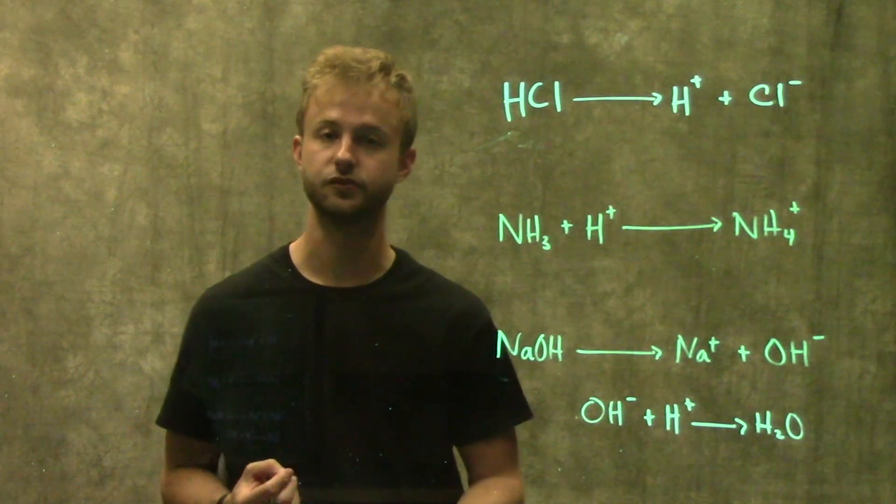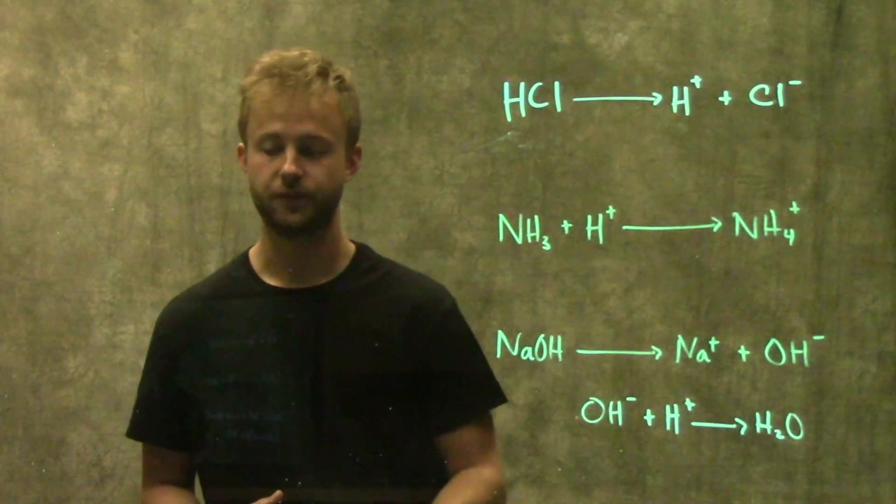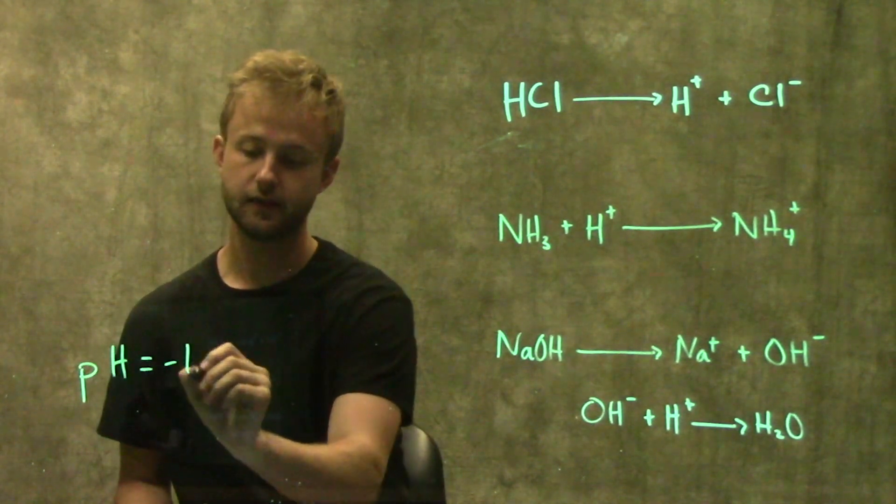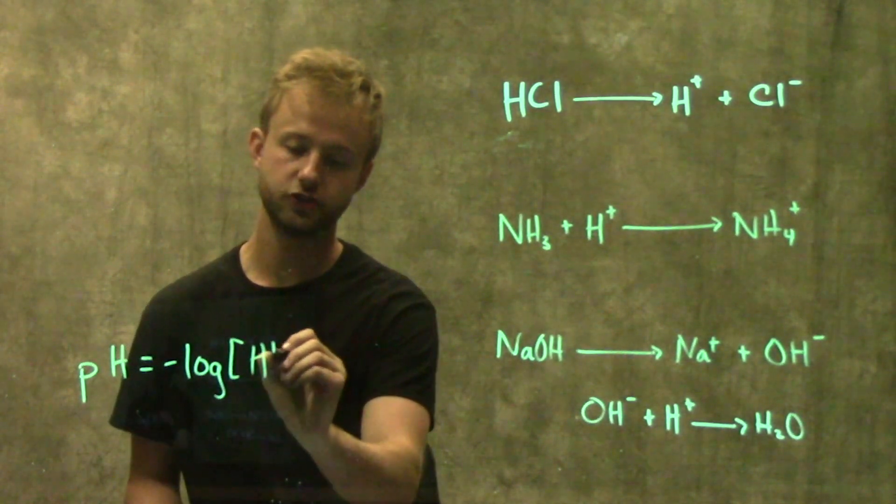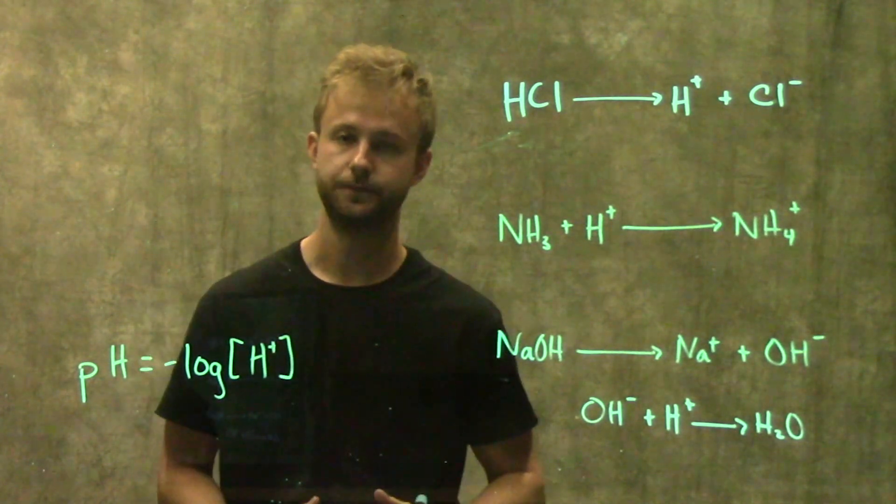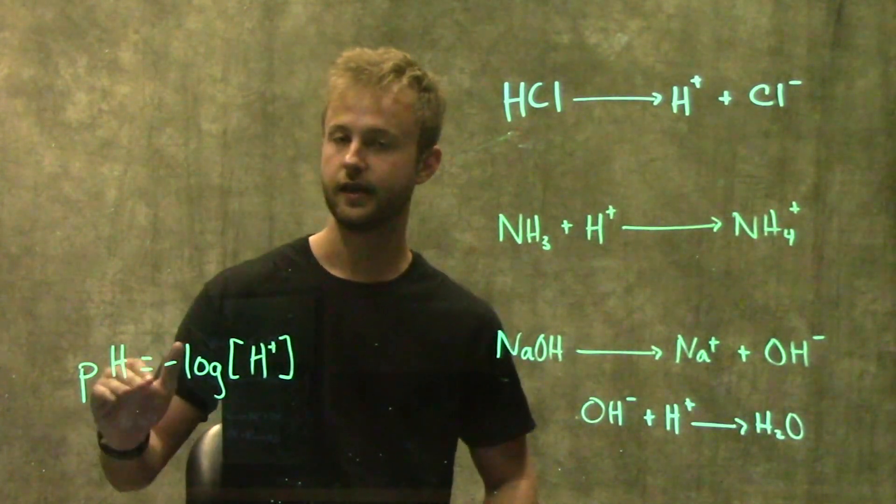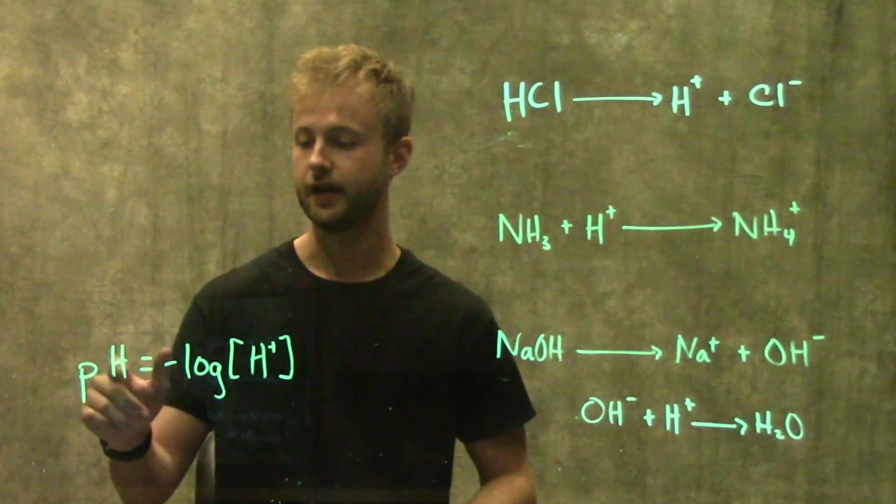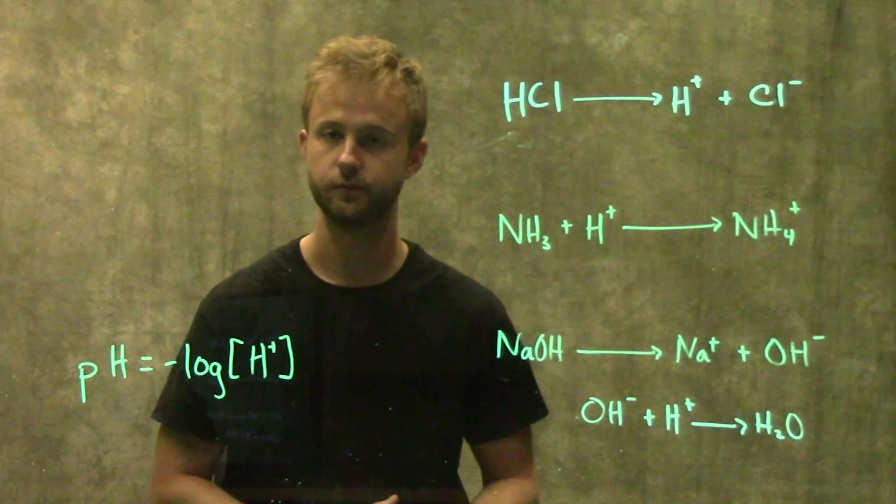Now that we know how acids and bases work, we can look at the pH scale. The pH scale is the negative log of the concentration of hydrogen atoms in your solution. Anytime you see p and something else, the lowercase p means take the negative log, and the H means the concentration of hydrogen atoms.